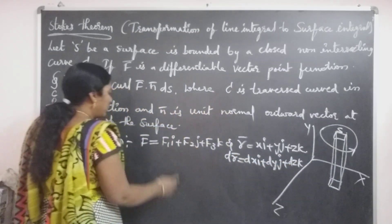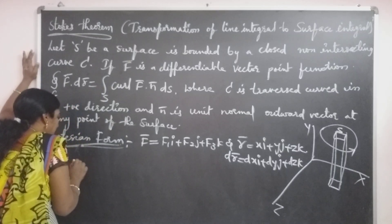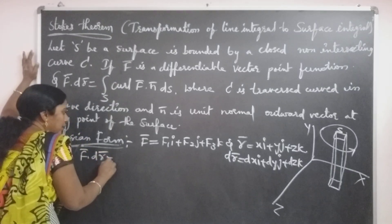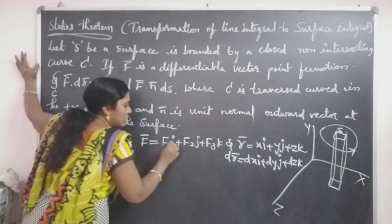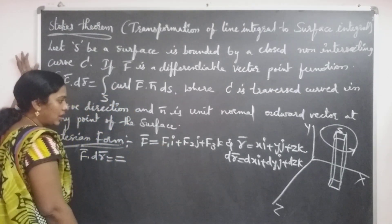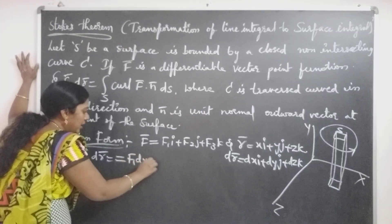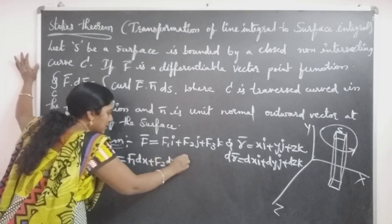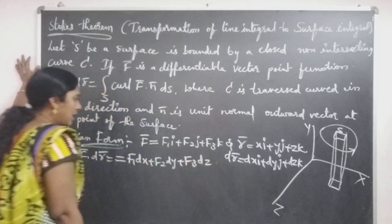The dot product on the LHS equals the integral over closed curve C of F-bar dot dr-bar. The dot product between these two vectors: since i dot i equals 1, this gives F1·dx plus F2·dy plus F3·dz.